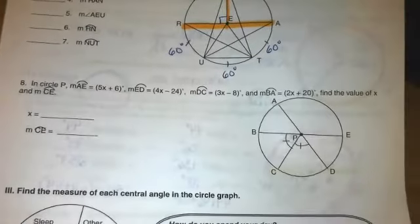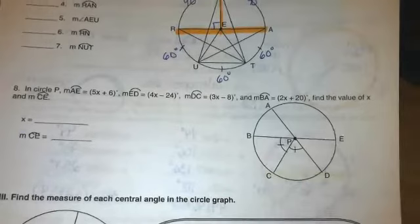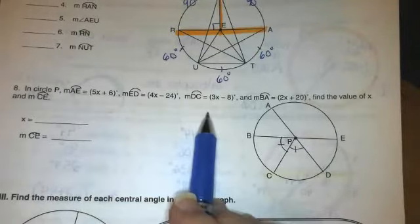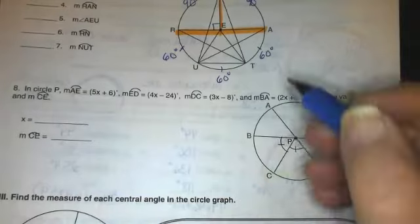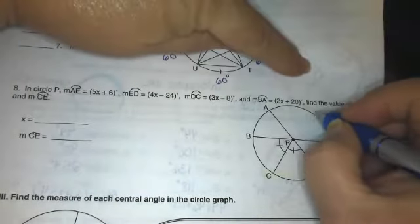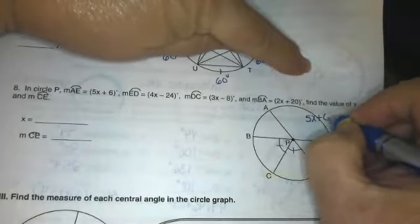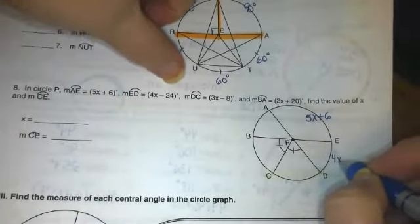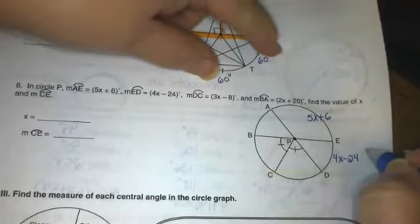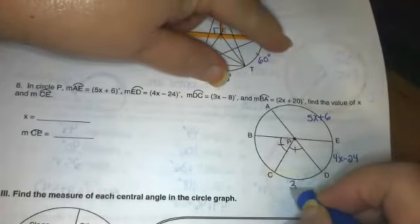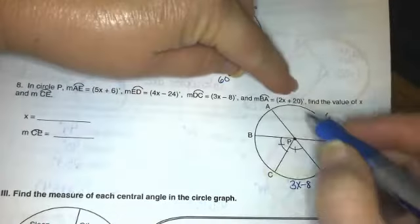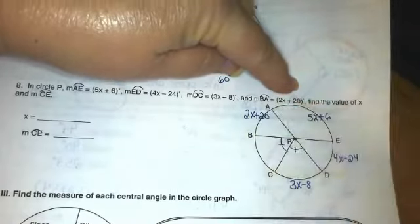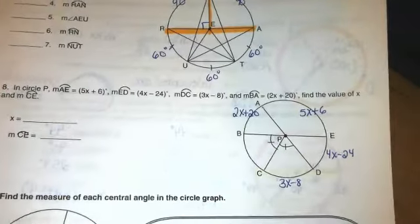All right, number eight threw in a little bit of algebra, not too hard though. I always like to label my picture because looking at this doesn't mean a whole lot until I put it in the picture. So arc AE is 5x plus 6, ED is 4x minus 24, DC is 3x minus 8, and BA is 2x plus 20. All right, we're in good shape.